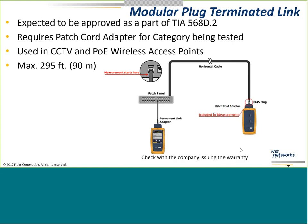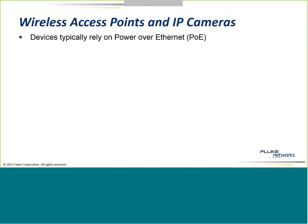We've decided we're going to use copper because we need a powered device on the far end — maybe an access point, maybe a camera. One of the main reasons we're going to use copper is that copper can send power. Start talking about IoT, the Internet of Things — people say everything's going to be wireless and connected.